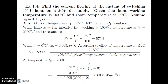We need to calculate R1 (at room temperature, T1 equal to 15 degree Celsius) and alpha1. When the lamp is at full intensity, the wattage is 100 Watt and the working temperature is 2000 degree Celsius. Using the power formula P equals V squared by R, we get R2 equals V squared upon P equals 240 squared divided by 100, which gives 576 Ohm. This is the resistance at T2 equal to 2000 degree Celsius.